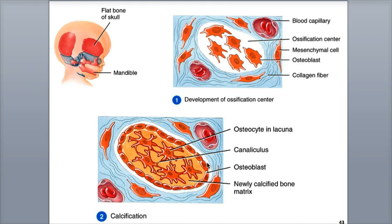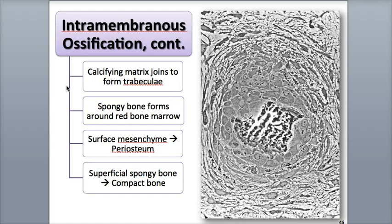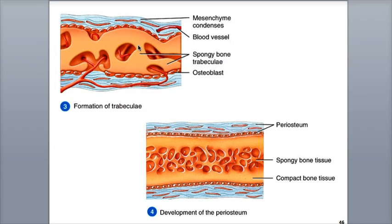Canaliculi connect the lacunae and osteocytes to each other. During this calcification process, calcium and more mineral salts are continuously deposited in the matrix as it hardens. In the third step, as the matrix hardens, it forms trabeculae that merge and fuse with each other to form spongy bone. The spaces within spongy bone contain blood vessels and red bone marrow forms. Here we see the trabeculae fused together of the spongy bone with plenty of spaces to allow blood vessels and marrow to form.